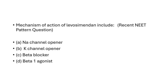The answer is potassium channel opener, because levosimendan is an inodilator that acts by calcium-sensitizing action through binding to troponin C, which is the potassium channel opener action, and it is responsible for vasodilation. So the answer is B — potassium channel opener.